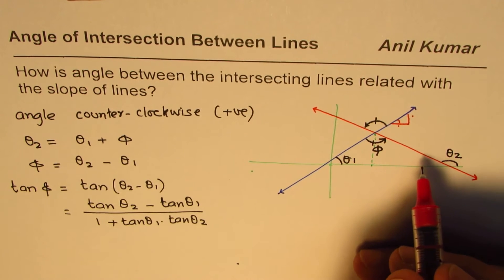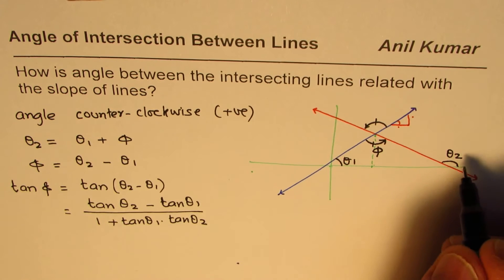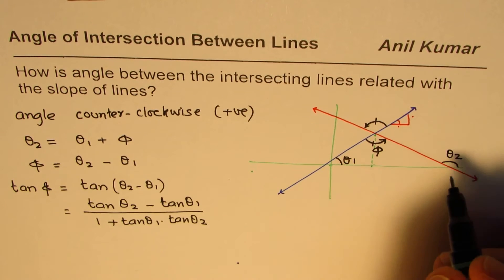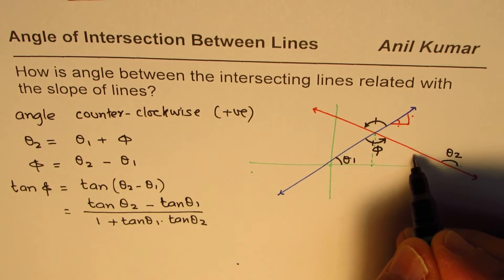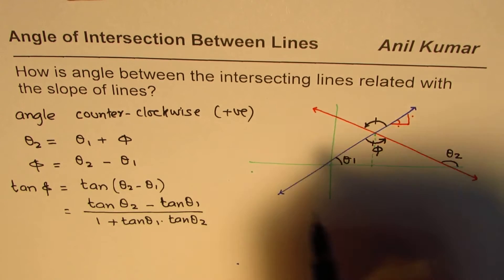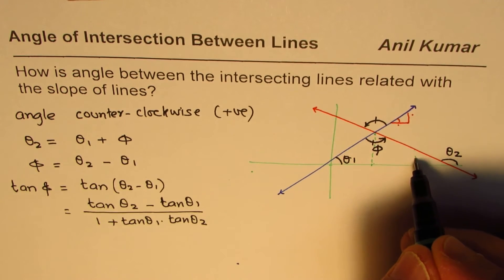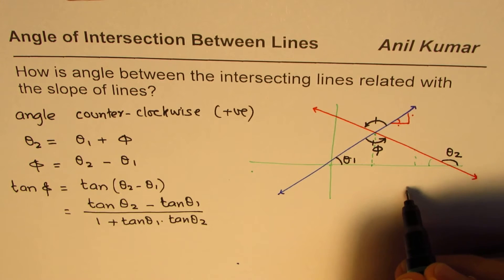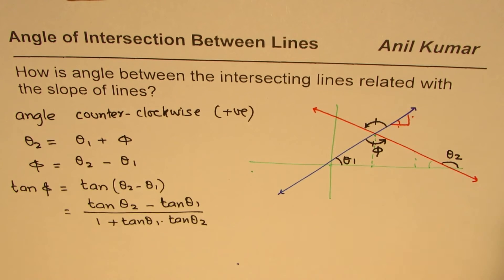For the second line also if you consider what is tan theta 2, tan theta 2 in this case we can say 90, 180 minus theta 2. So basically this angle here will be 90 minus that or you can say we can talk about that angle and then do 180 minus that.